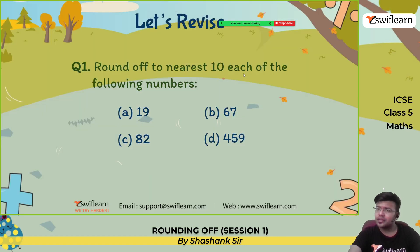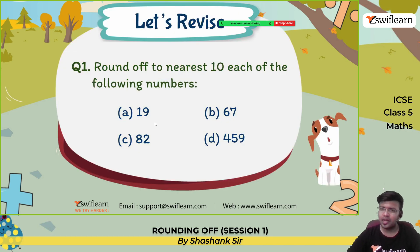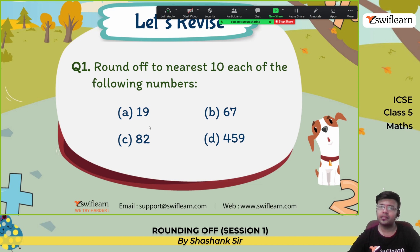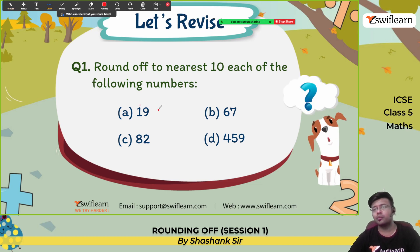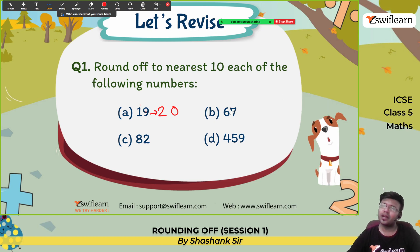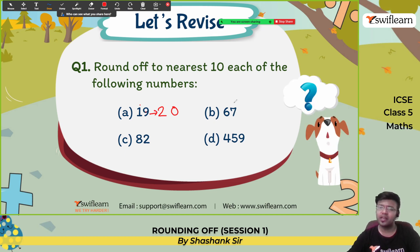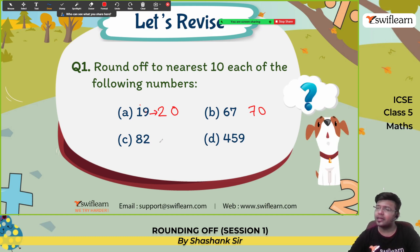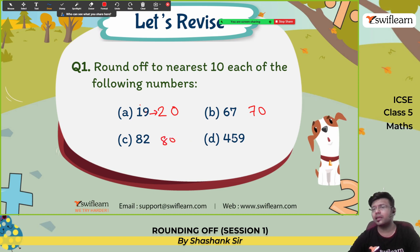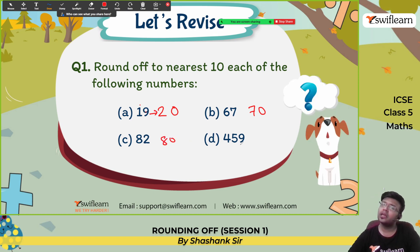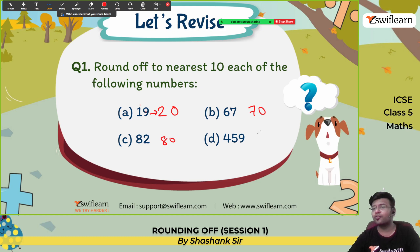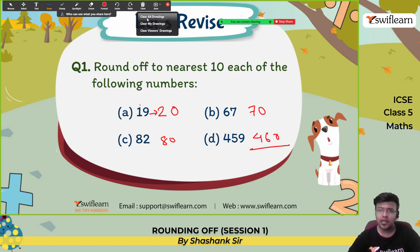Round off to the nearest ten in each of the following numbers. Check the units place: if it is greater than 5, add one to the tens digit and make the units zero. For example, the answer is 20. Next, rounded to the nearest ten: it comes between 60 and 70, greater than 65, so it is 70. For 82: between 80 and 90, less than 85, so 80. For 459: the answer is 460.